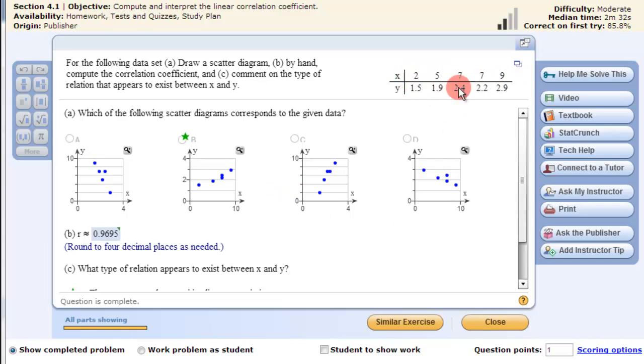So here's the data that needs to be put in. The explanatory variable is in list 1, that's the x values. The response variable will be in list 2.